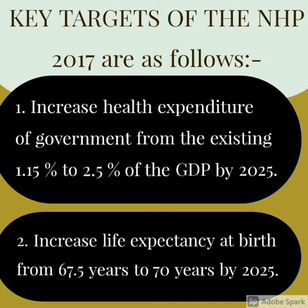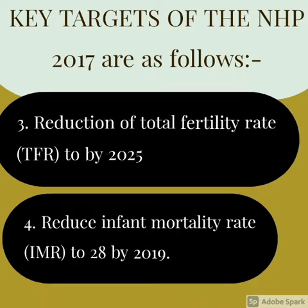Key targets of NHP 2017 are as follows. First, increase health expenditure of government from the existing 1.15% to 2.5%. Second, increase life expectancy at birth from 67.5 years to 70 years by 2025. Third, reduction of total fertility rate by 2025.